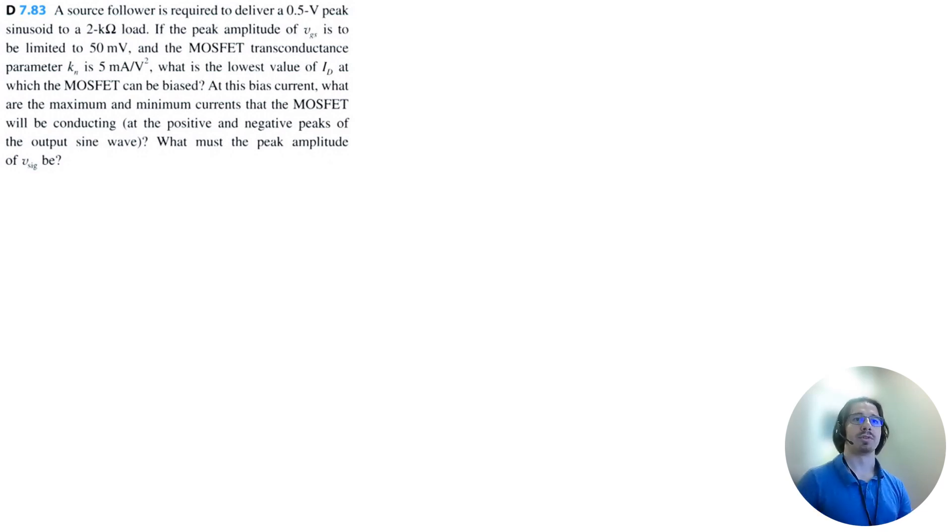Let's solve problem 7.83 for Microelectronics Circuits 8th edition by Sedra and Smith. Source followers are required to deliver a 0.5 volt peak sinusoid to a 2 kiloohm load. If the peak amplitude of VGS is to be limited to 50 millivolts, and the MOSFET transconductance parameter KN is 5 milliampere volt squared, what is the lowest value of drain current at which the MOSFET can be biased?